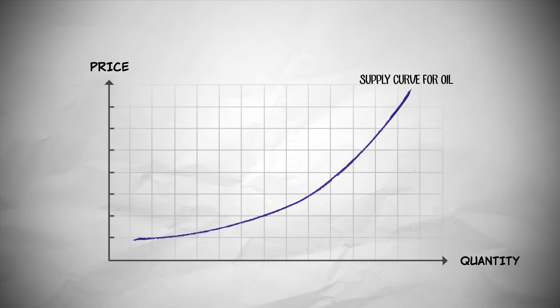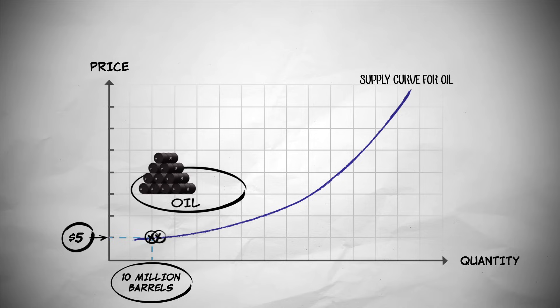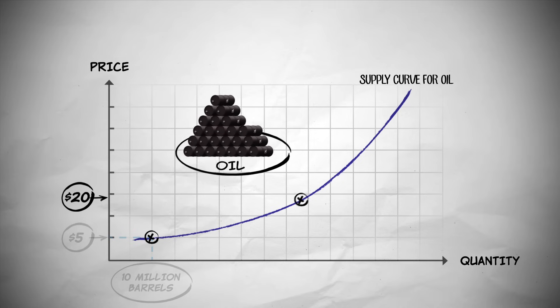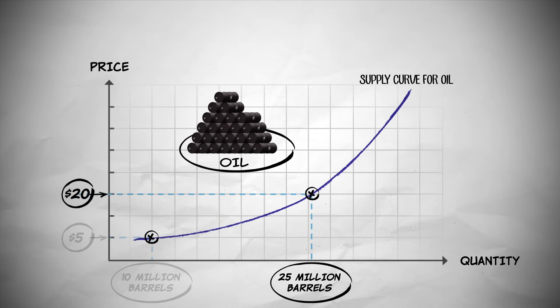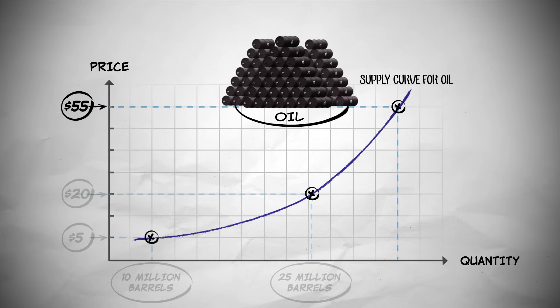We see an intuitive relationship between price and the quantity supplied. As the price goes up, the quantity of oil that companies are willing to supply increases. In this example, at a low price, $5 per barrel, let's say 10 million barrels of oil are supplied per day. At $20 per barrel, 25 million barrels are supplied. And at $55 per barrel, 50 million barrels are supplied. So in general, a higher price means a greater quantity supplied.